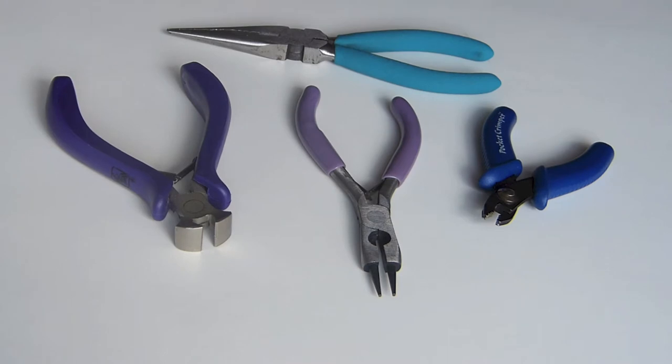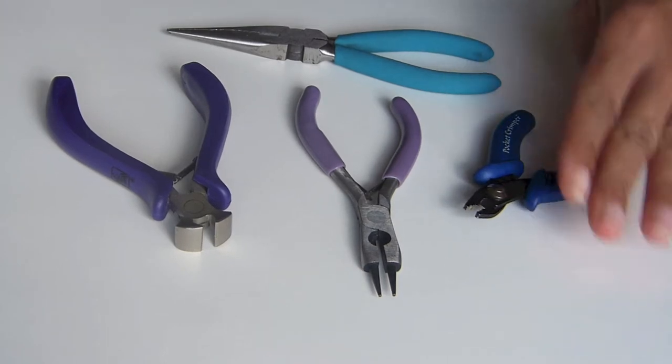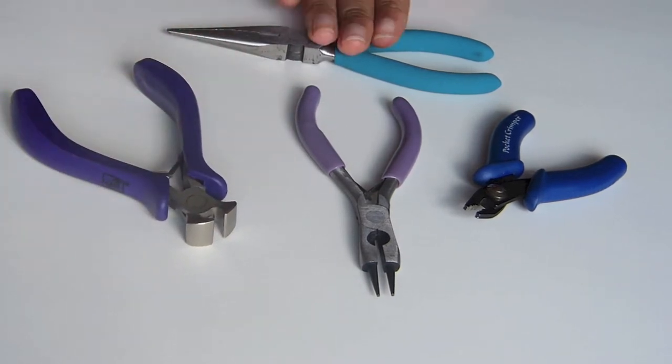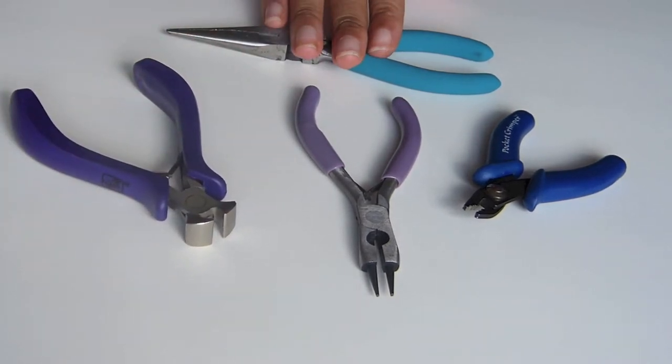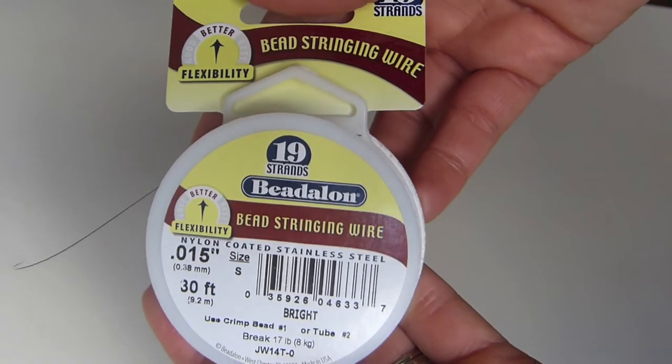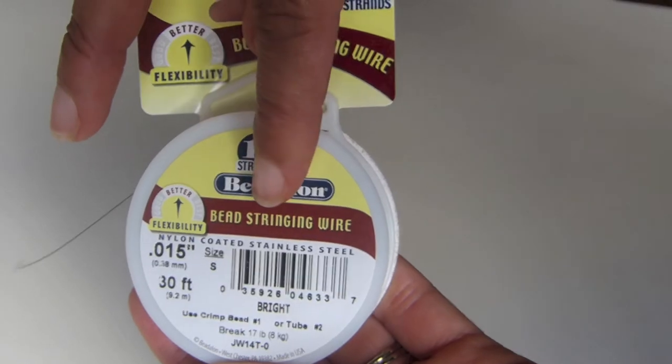You'll need a few items: crimping pliers, needle nose pliers, a wire cutter, as well as a flat style plier. In addition to this, you're going to need bead stringing wire. This one is by Beadalon.